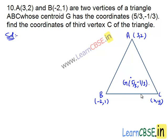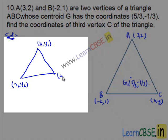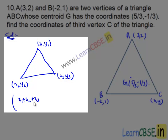We need to find the coordinates of the third vertex of triangle ABC. We know that the centroid of the triangle formed by the points x1, y1, x2, y2 and x3, y3 is given by x1 plus x2 plus x3 divided by 3.